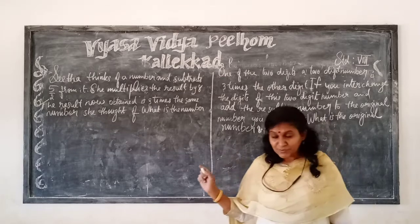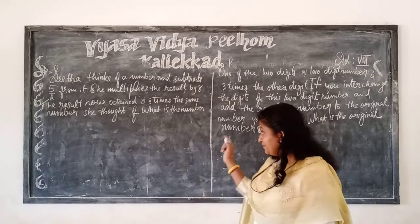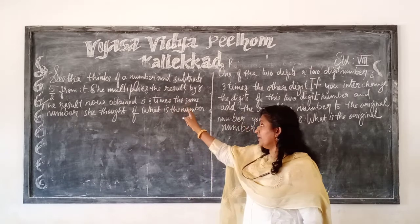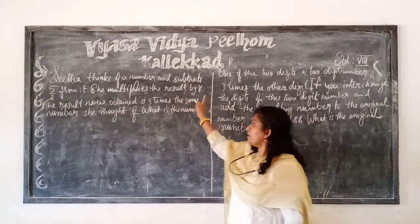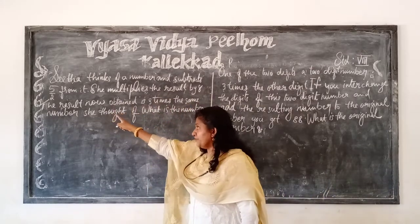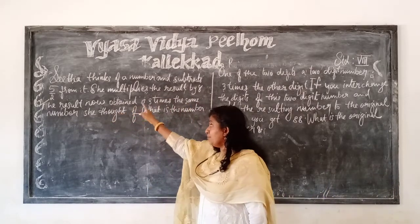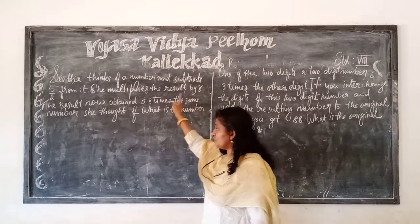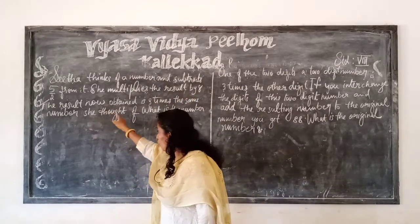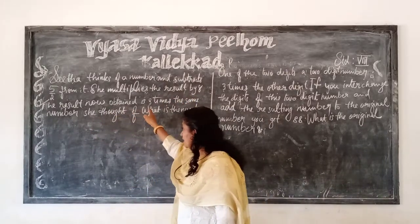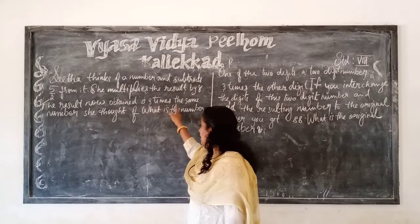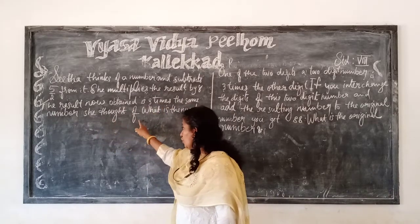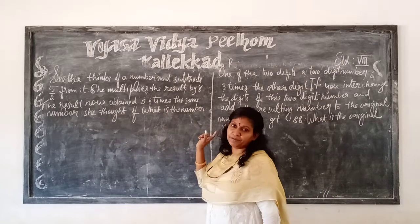Next program. Think of a number and subtract 5 by 2 from it. She multiplies the result by 8. The result now obtained is 3 times the same number. What is the number?